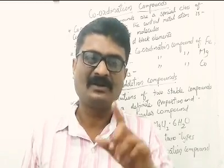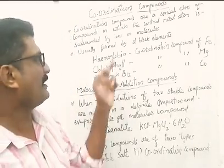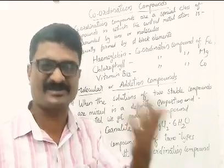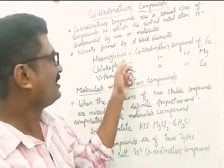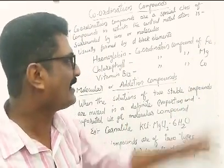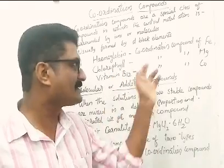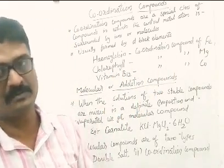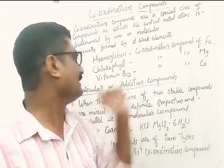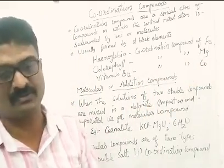For example, Haemoglobin — we already know Haemoglobin acts as an oxygen carrier from one cell to another cell. Haemoglobin is a coordination compound of iron, and iron belongs to the D-block. Chlorophyll is a coordination compound of magnesium. Vitamin B12 is a coordination compound of cobalt.